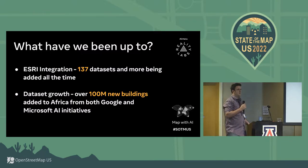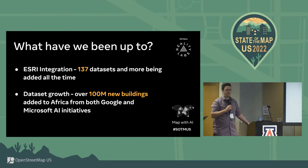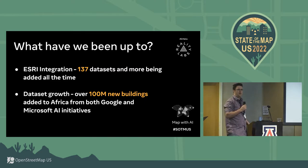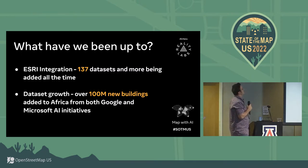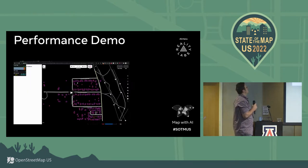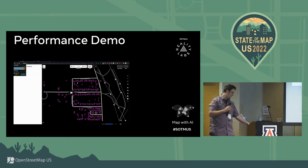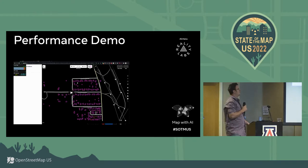Lately, the Esri integration is up to about 137 datasets. One of them is that massive Google African buildings dataset released in the second half of last year, which added about 50 million new buildings. Microsoft also added about 50 million new buildings in Africa last year. So the datasets are growing, which means we're constantly trying to add more and more stuff to the map. That leads us to our next announcement, which is brand new for State of the Map — a performance demo of something Brian and I have been working on for the last three months.